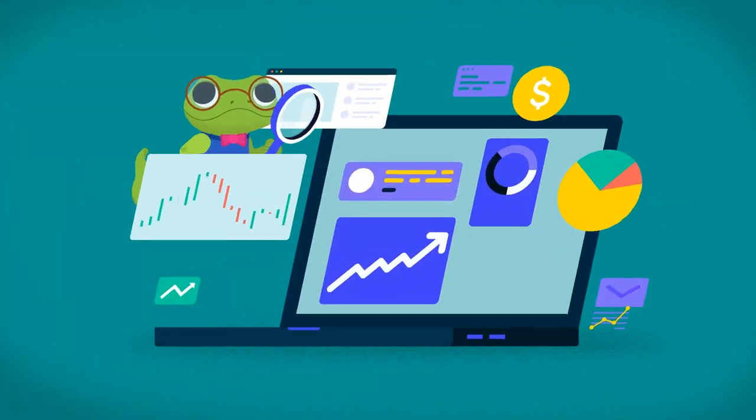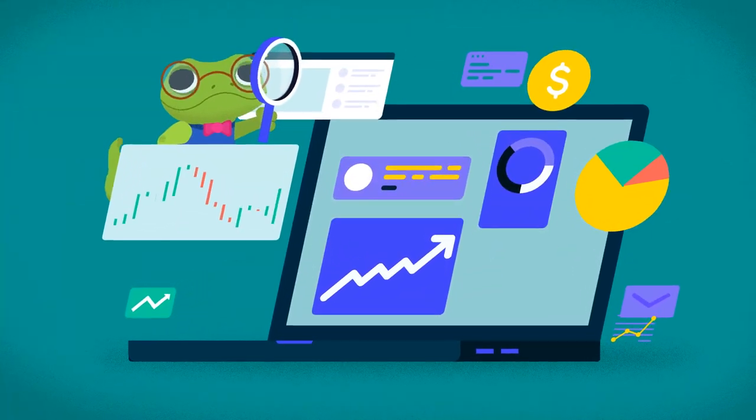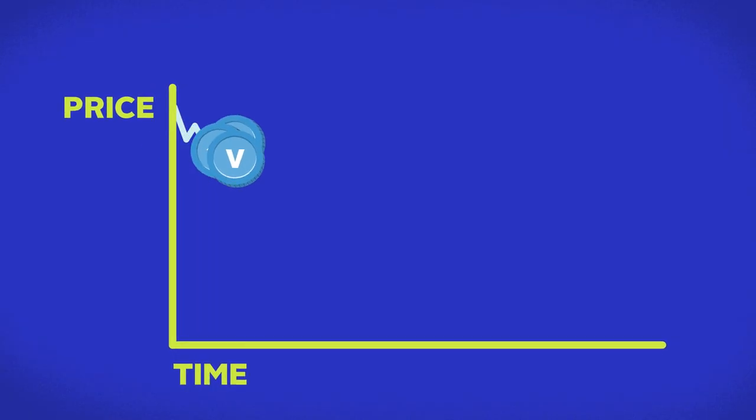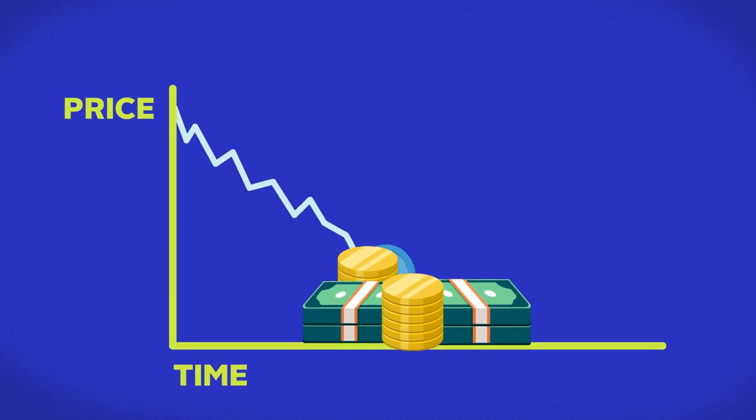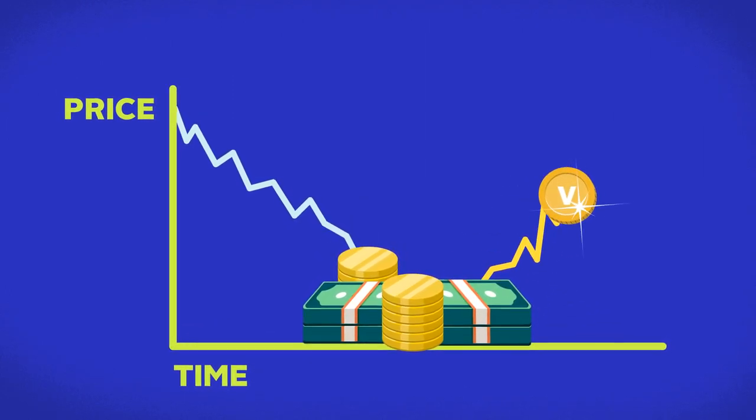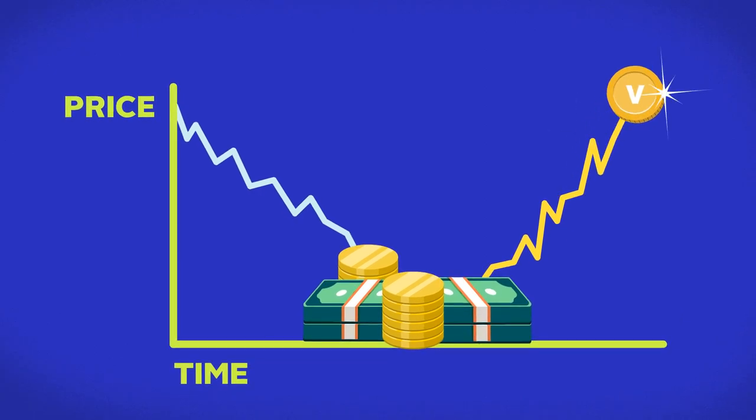Let's now break down how a short squeeze happens by looking at this example. Asset V's price looks like it's about to drop and many investors decide to short the asset. However, things don't go quite as planned. The price of Asset V rises instead.